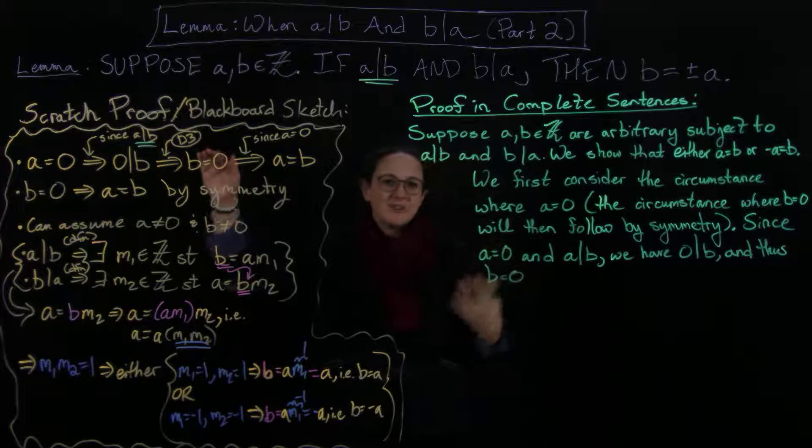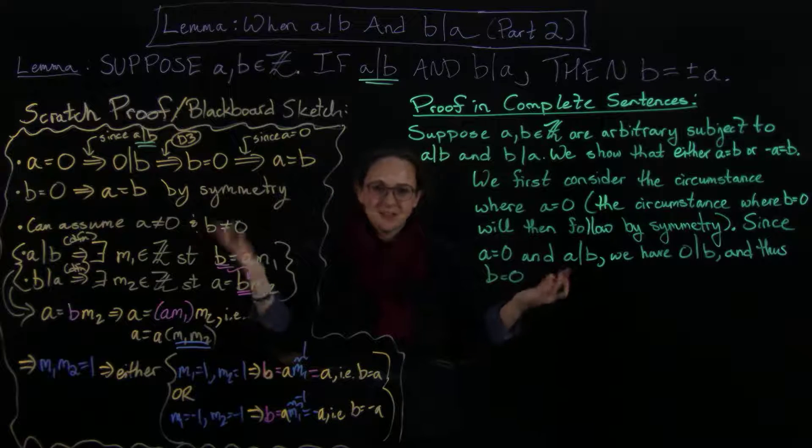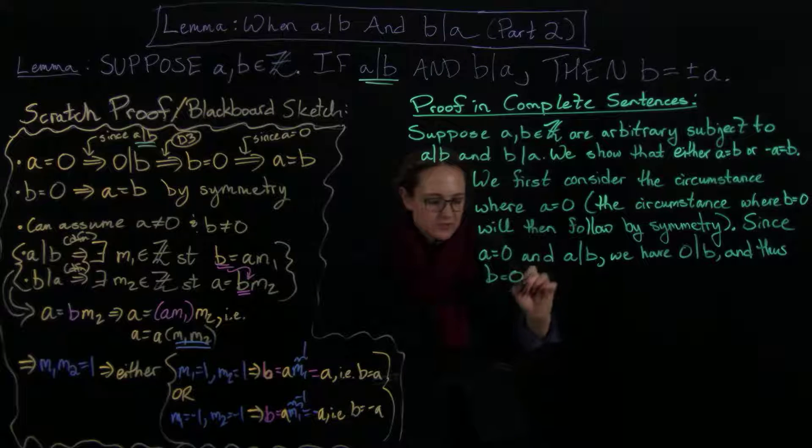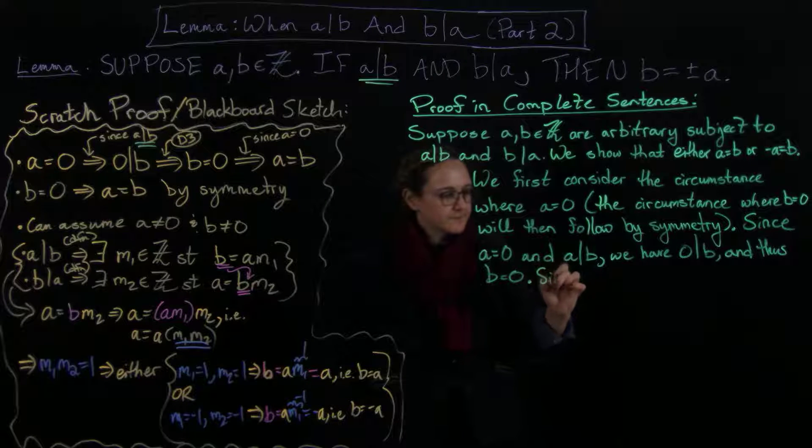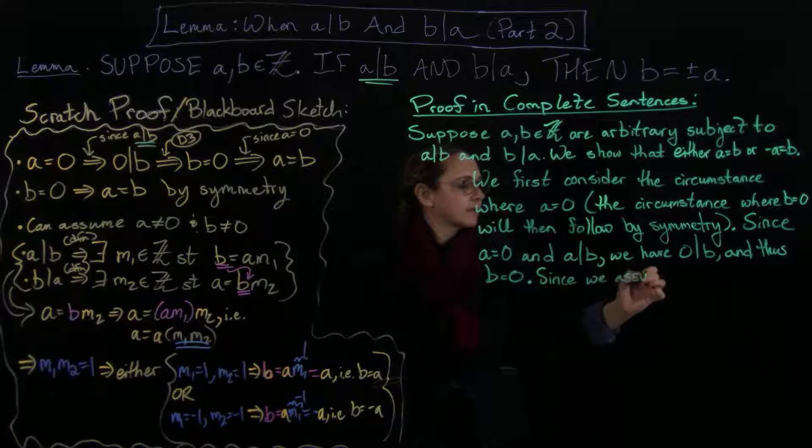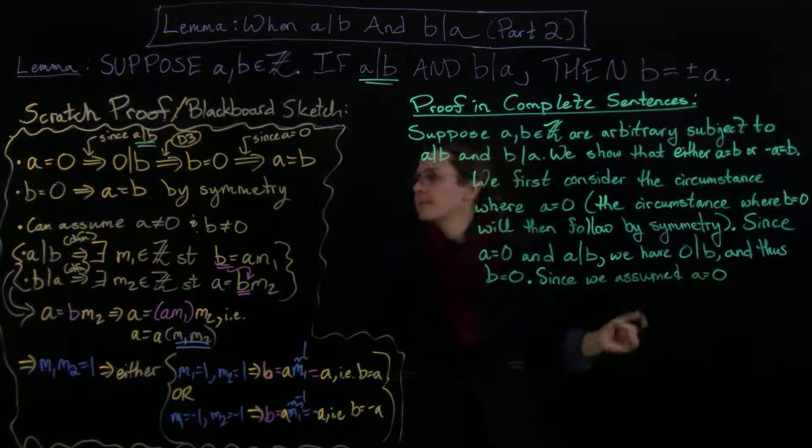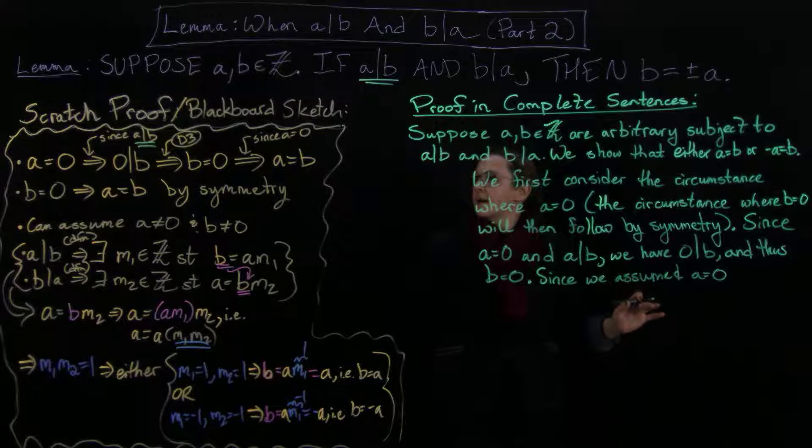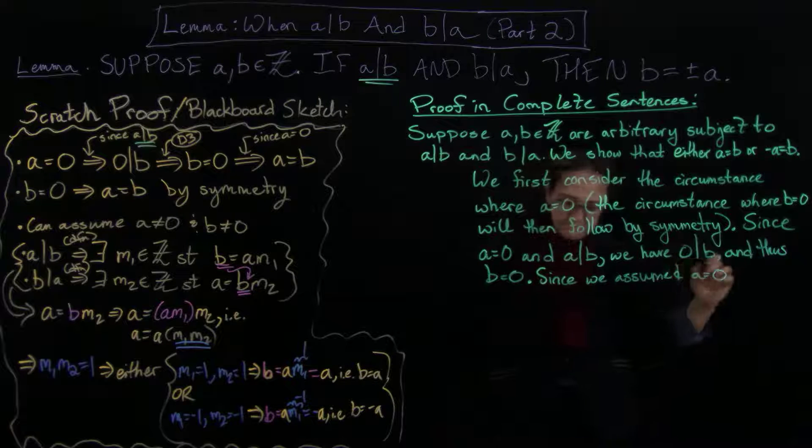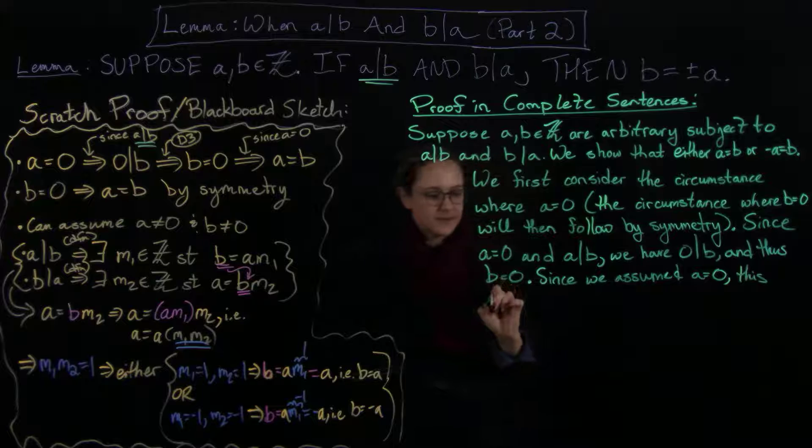The fact that this is, we call this D3, this is our own private language, you don't put that in like an assignment or something. So now since we assumed a equals zero, that's going to tell us that a equals b. So this implies a equals b as desired.